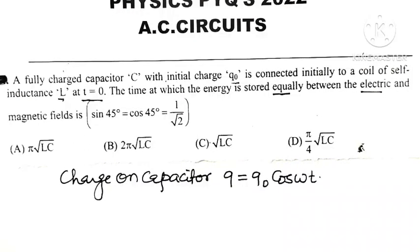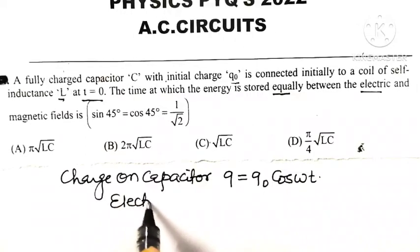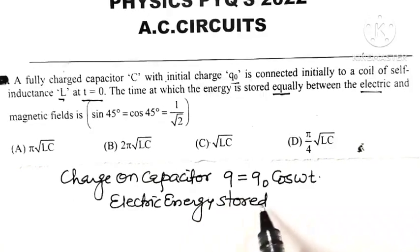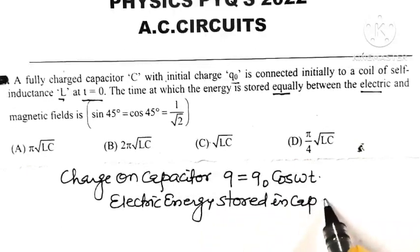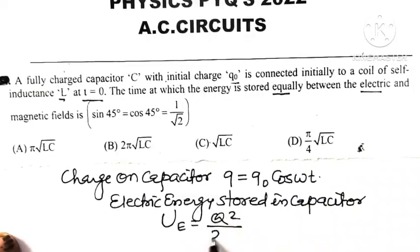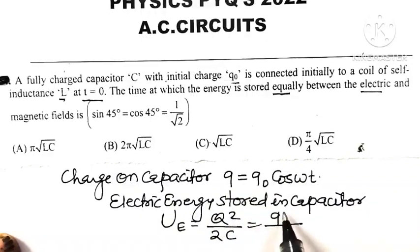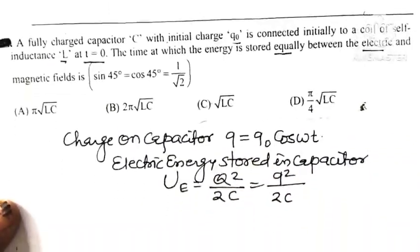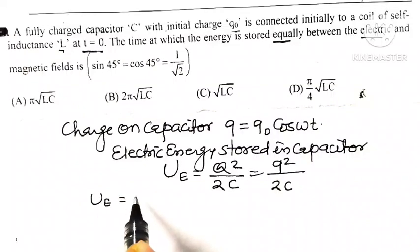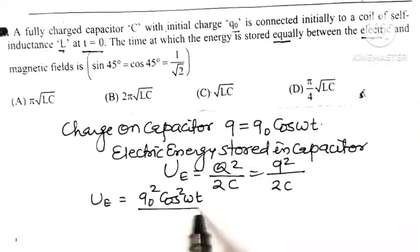The electrostatic energy stored in the capacitor is Ue equal to Q squared divided by 2C. Substituting Q equal to Q0 cos(omega t), the electric energy becomes Ue equal to Q0 squared times cos squared(omega t) divided by 2C.